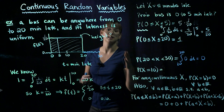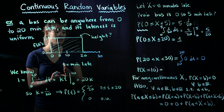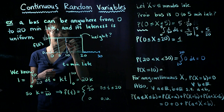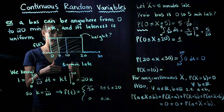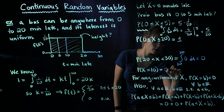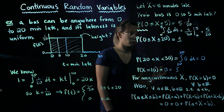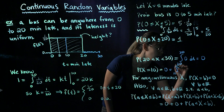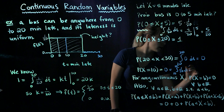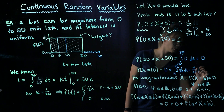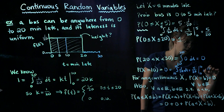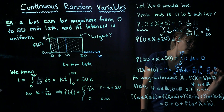What's the probability that the bus is exactly 10 minutes late? We're finding essentially the area of a line, but lines don't have any area, so this is 0. Using the integral: integrate from 10 to 10 of (1/20) dt, giving t/20 evaluated between 10 and 10, which is 10/20 minus 10/20, which is 0.